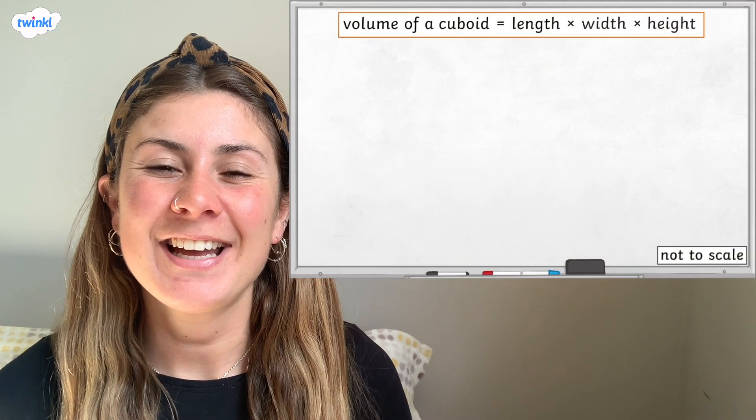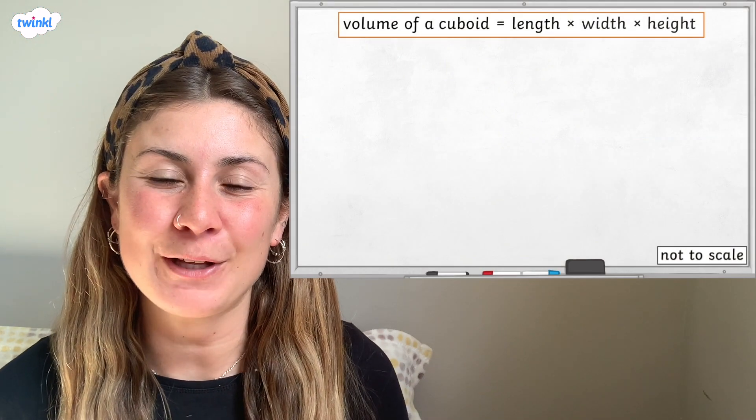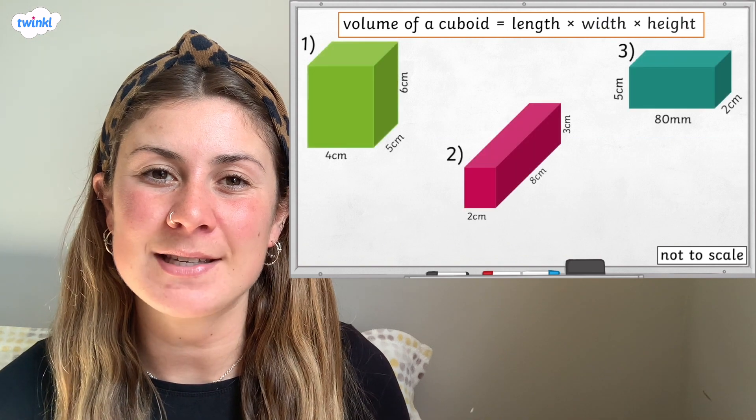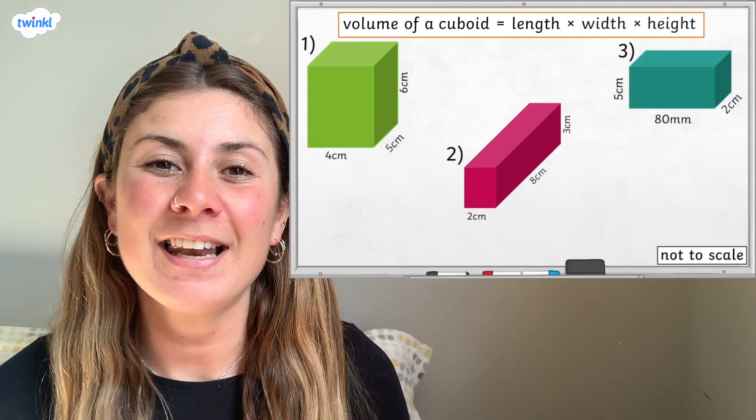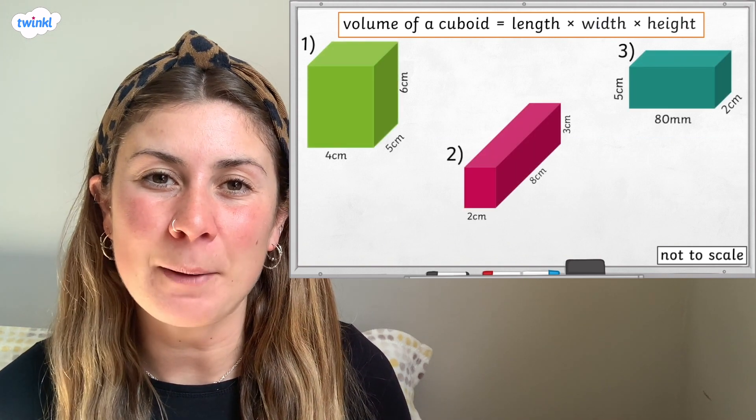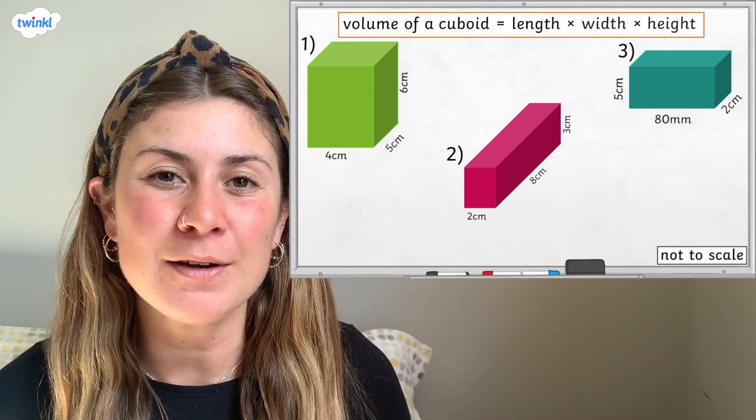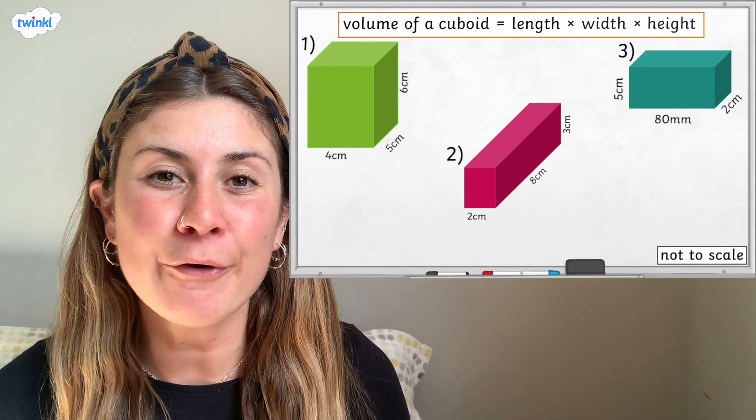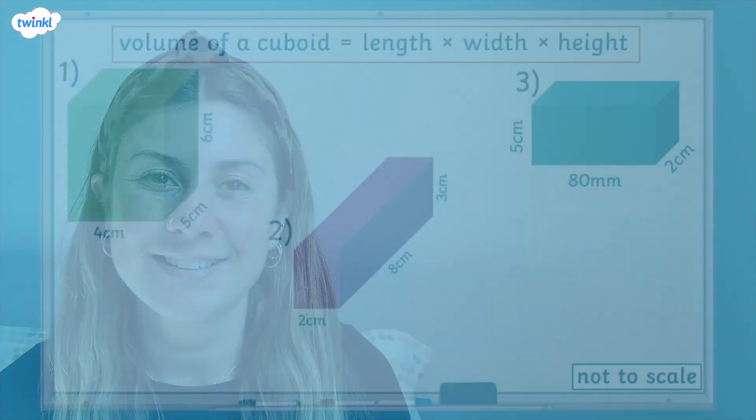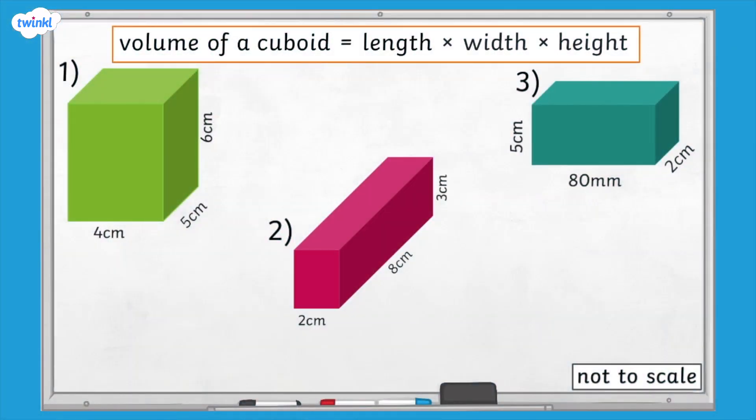Now it's your turn. I'd like you to calculate the volume of these three cuboids by using the formula length multiplied by width multiplied by height. Don't forget to check that all the units of measurement are the same before you calculate the volume. Pause the screen here and complete the question. Press play again when you're ready to continue.